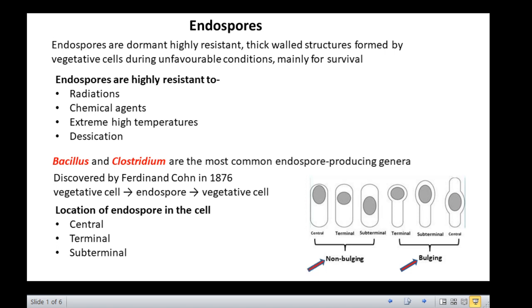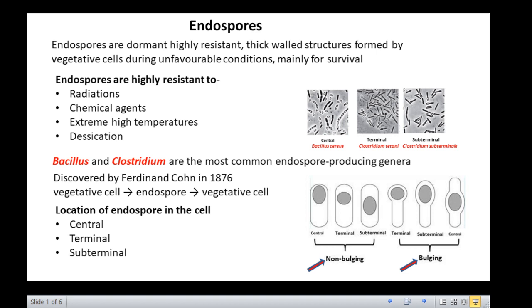Centrally located endospores can be seen in Bacillus cereus, terminally located in Clostridium tetani, and subterminally located in Clostridium subterminale.